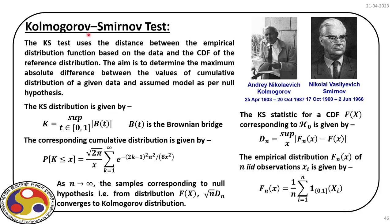In the Kolmogorov-Smirnov (KS) test, it uses the distance between the empirical distribution function based on the data and the CDF of the reference distribution. The aim is to determine the maximum absolute difference between the values of cumulative distributions for the given data and assumed model, and using that, verify whether our null hypothesis is accepted or not.